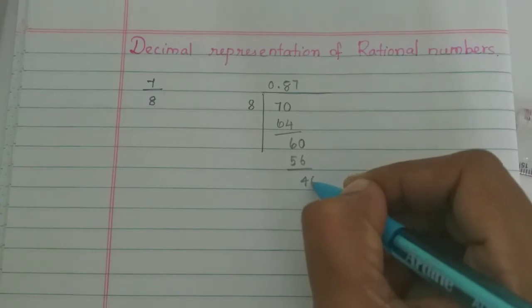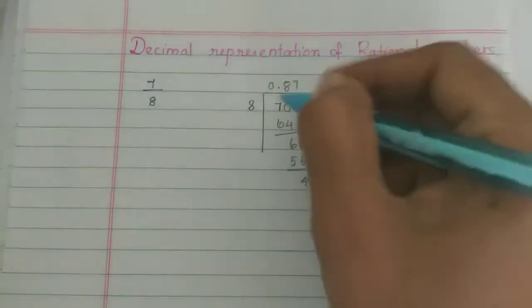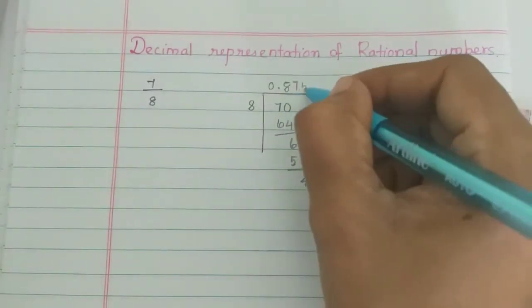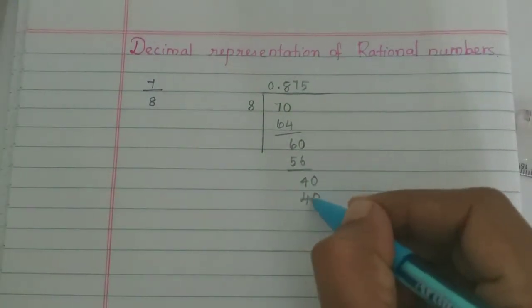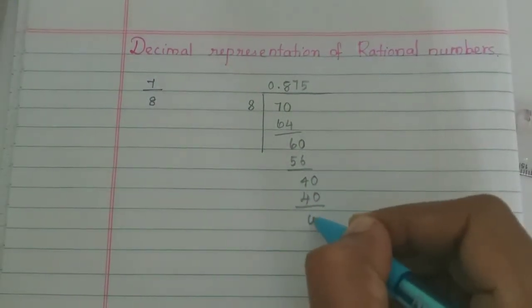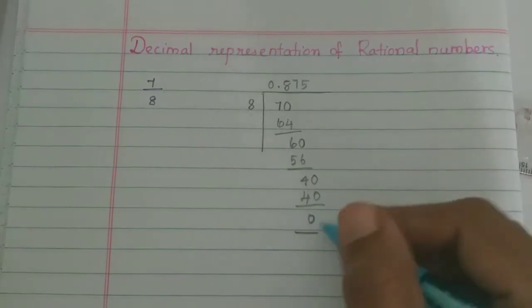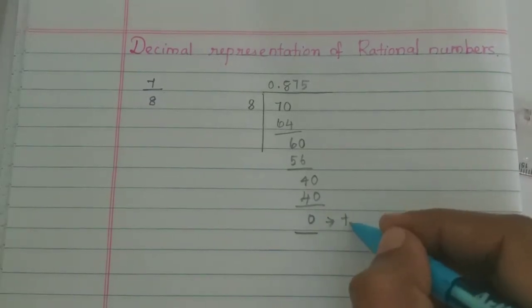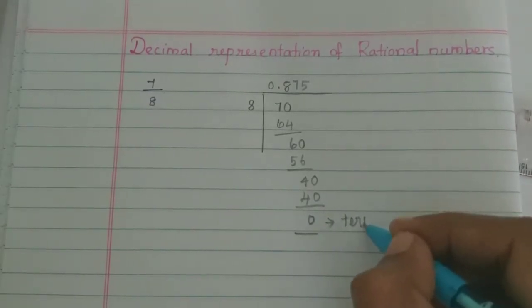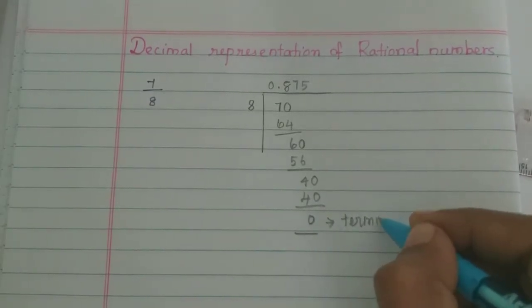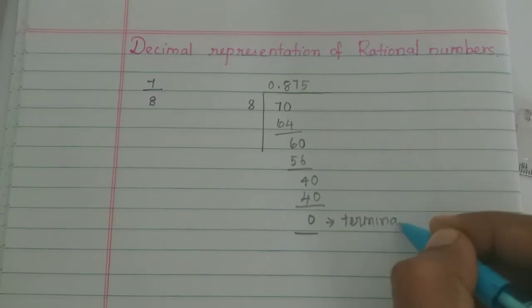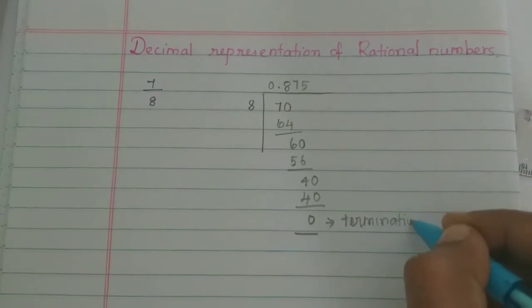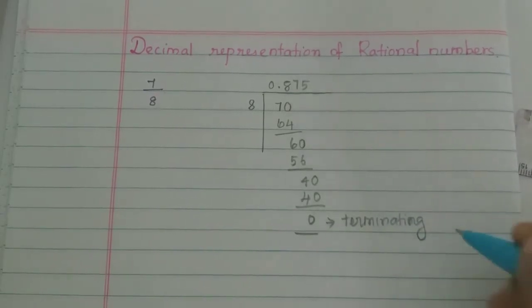We get remainder 0, so the division terminates. This is a terminating decimal, and therefore 7 divided by 8 is a rational number.